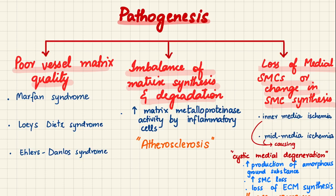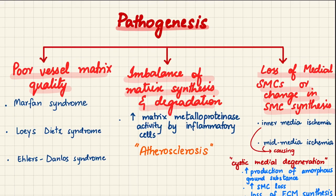Regarding pathogenesis, the first reason aneurysms form is poor vessel matrix quality — the arterial wall elastic tissue is deficient. Connective tissue disorders such as Marfan syndrome, Loeys-Dietz syndrome, and Ehlers-Danlos syndrome result in poor vessel matrix quality, making vessels prone to aneurysm formation under high blood pressure. The second reason is an imbalance of matrix synthesis and degradation, chiefly seen in atherosclerosis, where inflammatory cells produce matrix metalloproteinases that degrade the matrix.